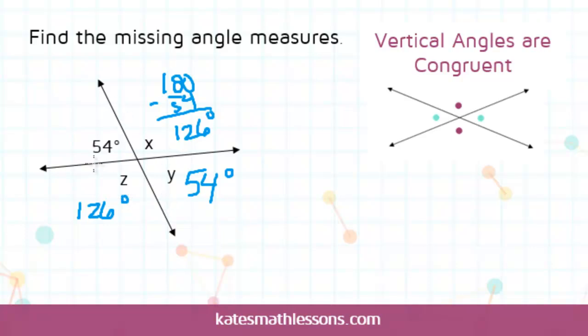So anytime you have two intersecting lines, you're going to end up with two sets of congruent angles.